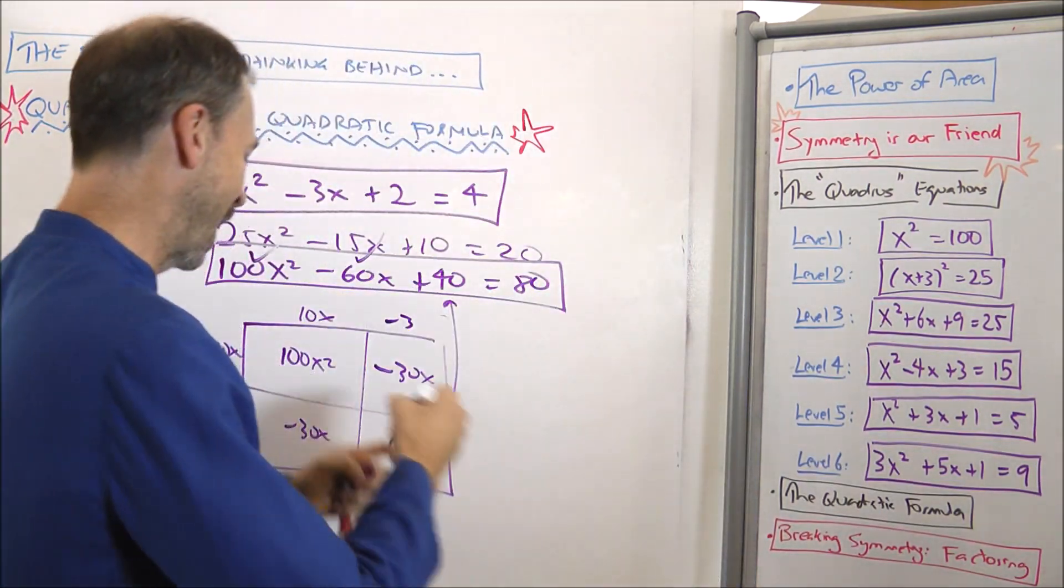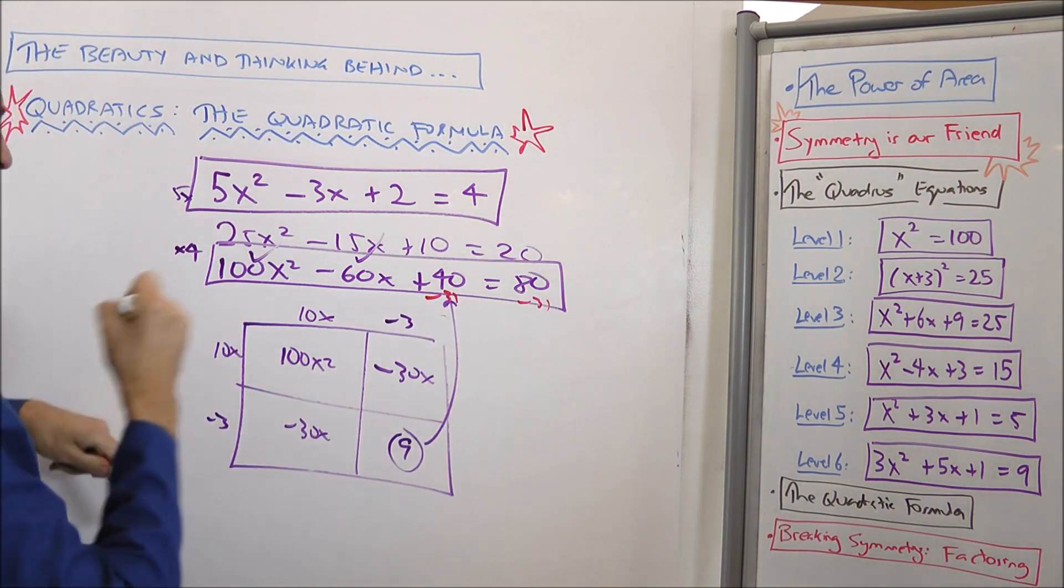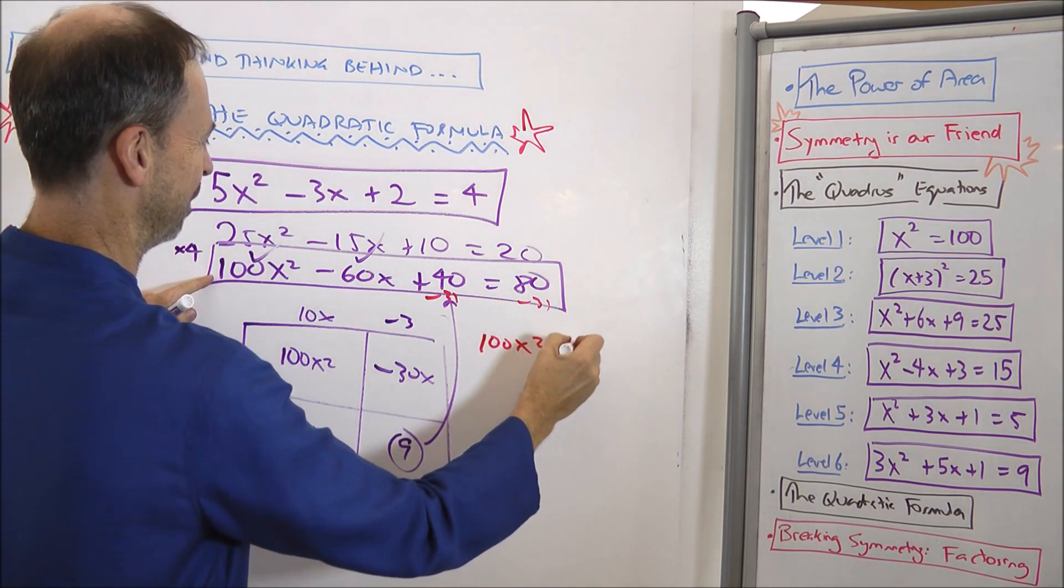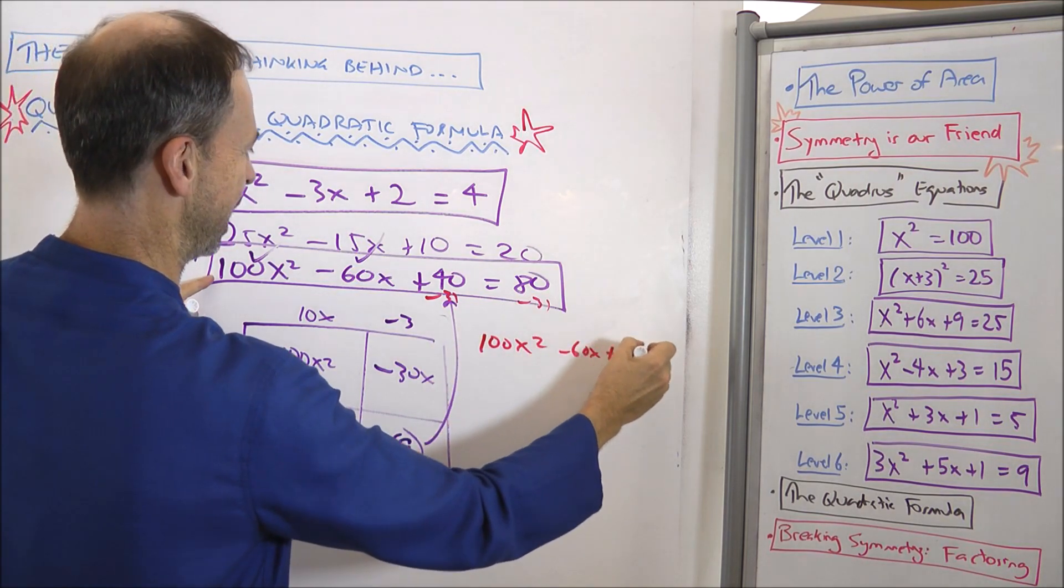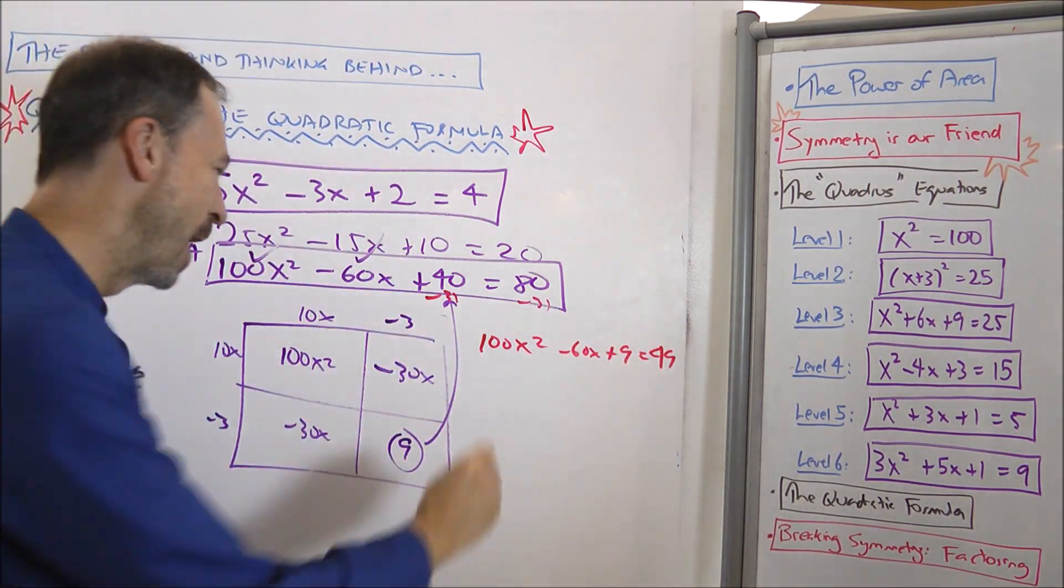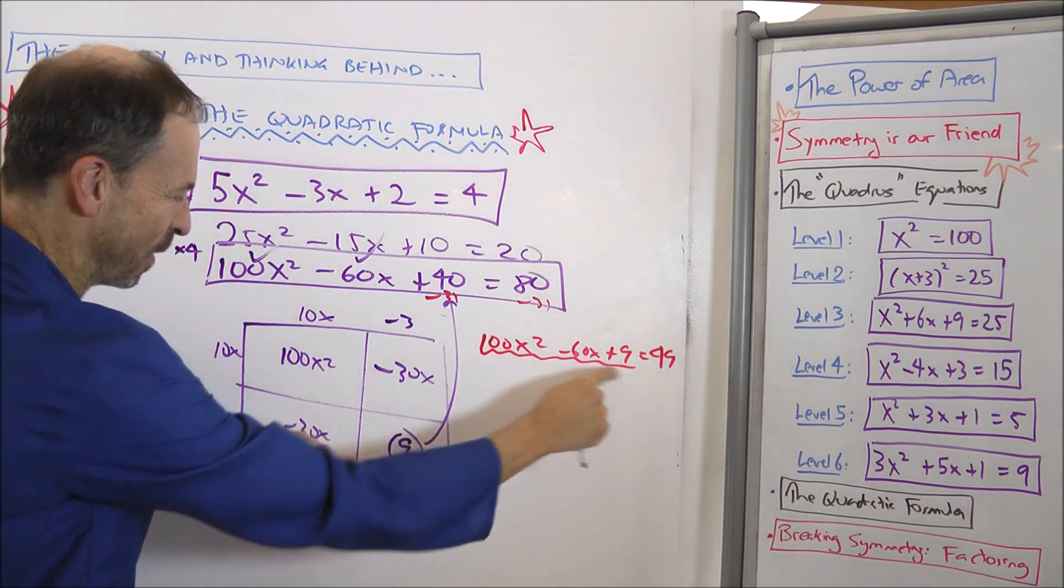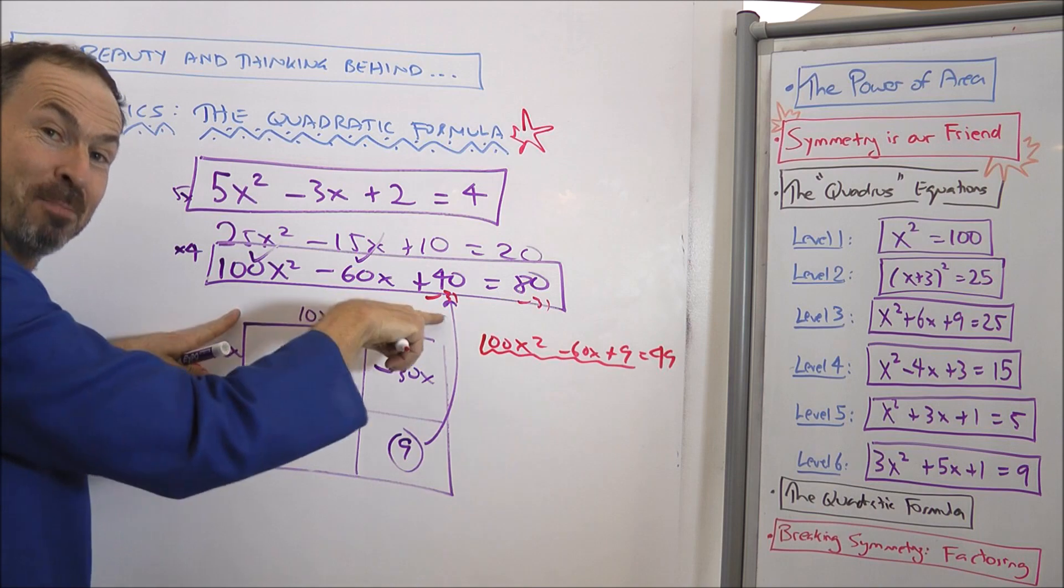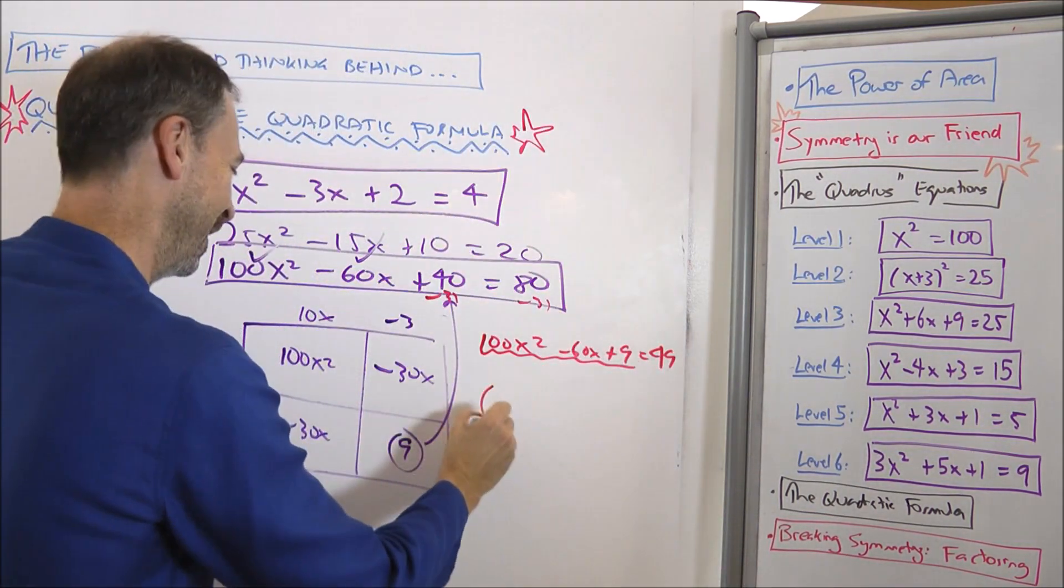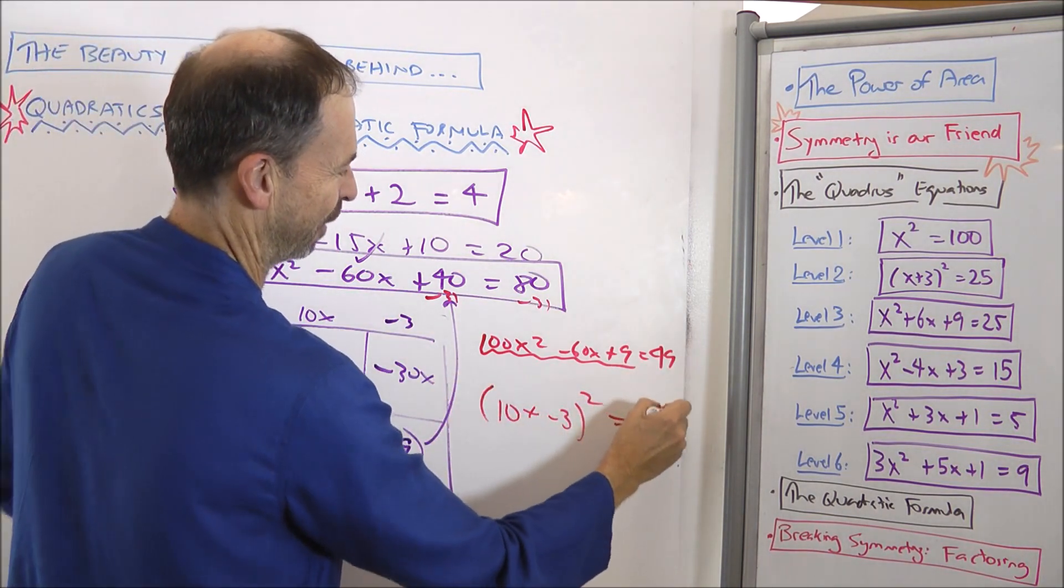Which means something times 10x makes minus 30x. Negative 3. Negative 3. Great. Which means the missing piece to complete the square is negative 3 times negative 3 in area 9. I don't have 9. I don't have 9. Okay, but I won't panic. Because if I subtract 31 from both sides, minus 31, minus 31, I'll now have the equation, I'll do it in red, 100x squared minus 60x plus 9 equals 49.